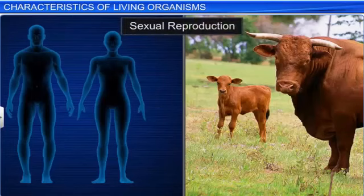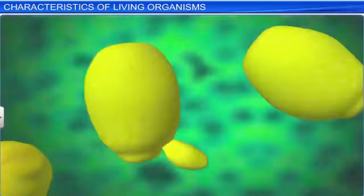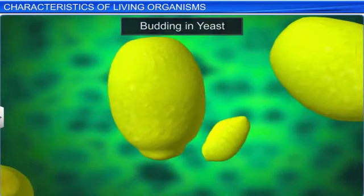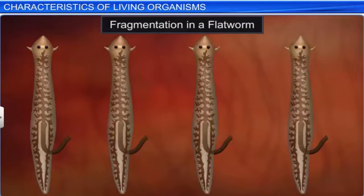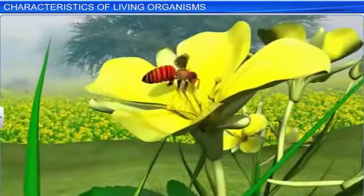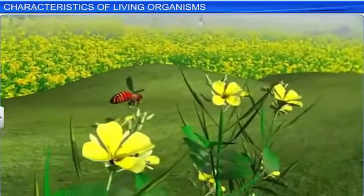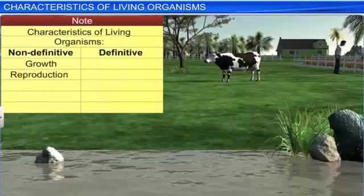Sexual reproduction can be seen in higher organisms like man and animals. Asexual reproduction can be seen in lower organisms, through budding as seen in yeast, or through fragmentation as observed in flat worm. However, certain organisms such as sterile worker bees are not capable of reproducing, but that doesn't mean they are non-living. Reproduction is therefore not a definitive characteristic of the living.